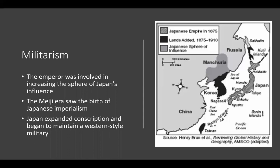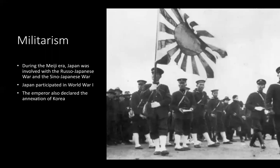The emperor was involved in increasing the sphere of Japan's influence. The Meiji era saw the birth of Japanese imperialism — the Japanese expanded conscription and began to maintain a Western-style military. They expanded into Korea and later into Manchuria. Japan also began to participate in more international wars, participating in World War I, though not heavily. It also participated in the Russo-Japanese War and the Sino-Japanese War, where Japan really showed that it could compete with major powers. It was truly a force to be reckoned with, with its new Western-style heavy military.